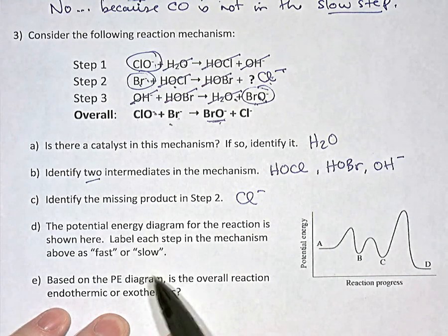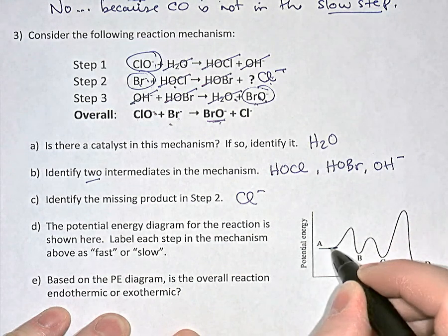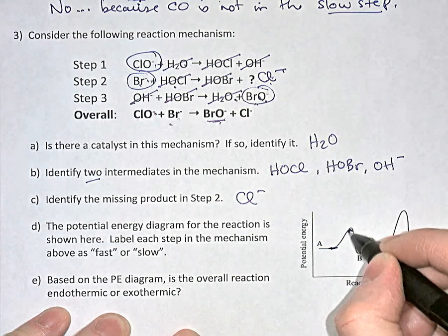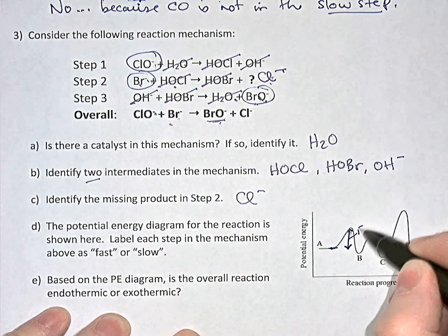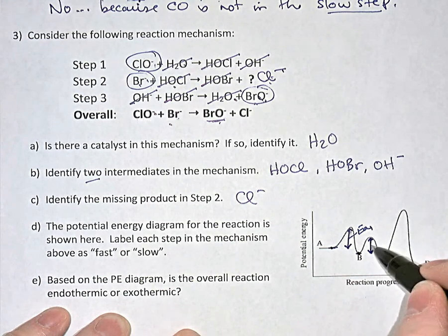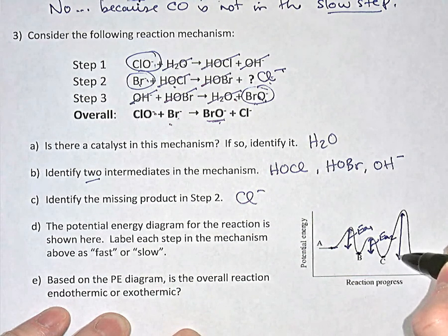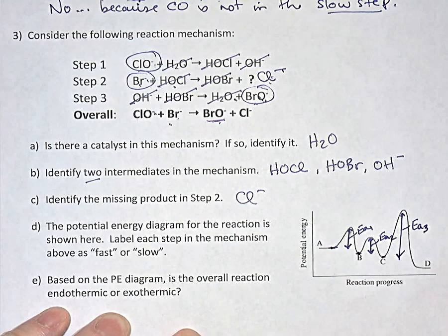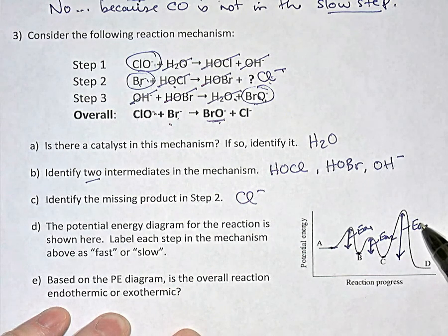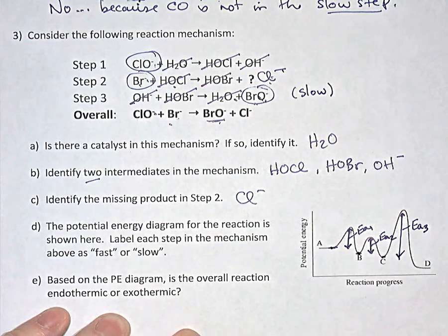In part D, the potential energy diagram is shown and we need to label each step as fast or slow. Step one reactants begin at energy level A, and the EA for step one is the energy up to its activated complex. Step two begins at B with its own EA, and step three begins at C with EA for step three. The rate-determining step — the slowest — has the largest activation energy, which is clearly step three. So step three is labeled slow.